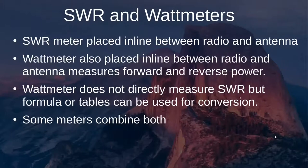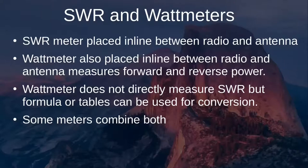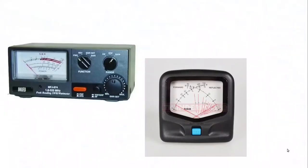An SWR meter is placed in line between the radio and antenna and measures the standing wave ratio. Wattmeters are also placed in line and measure forward and reverse power. The wattmeter does not directly measure SWR, but forward and reverse power can be converted to SWR using an equation or chart. Some meters contain both an SWR meter and a wattmeter.